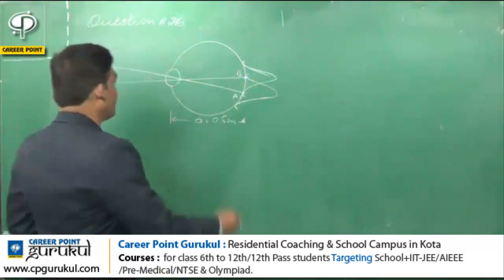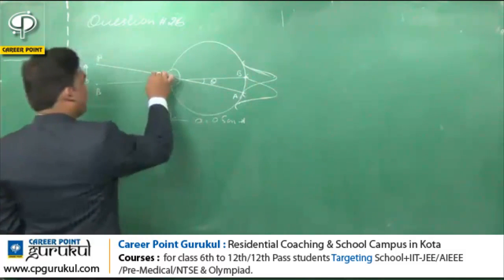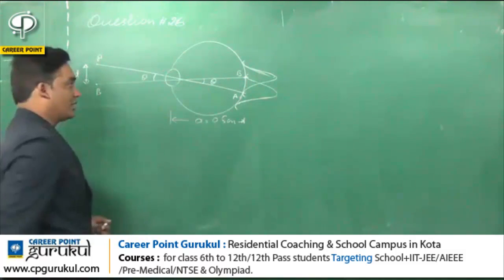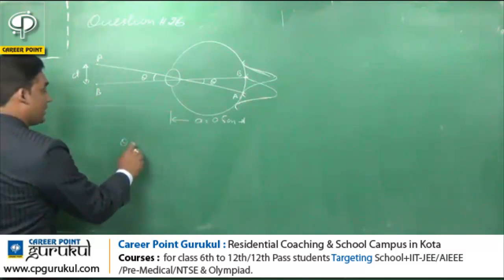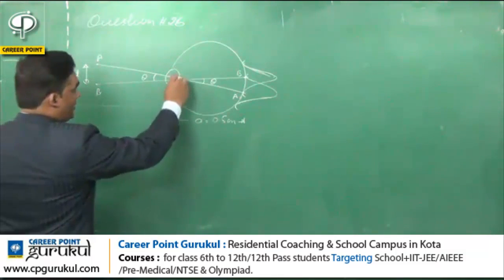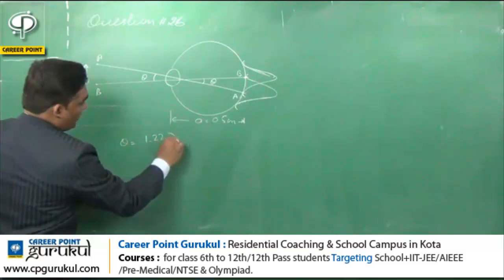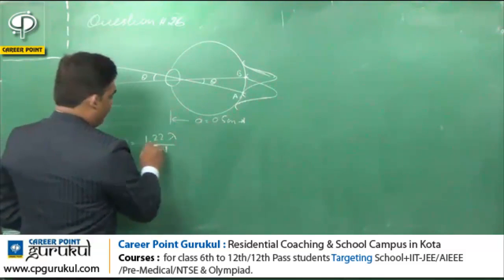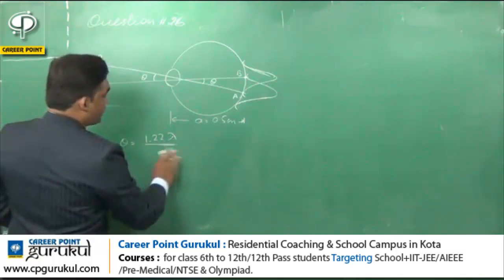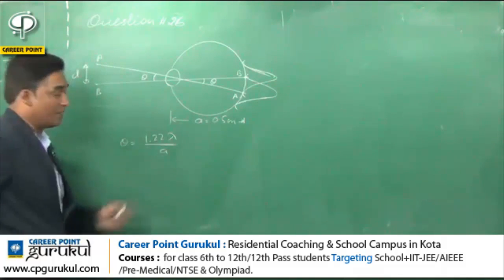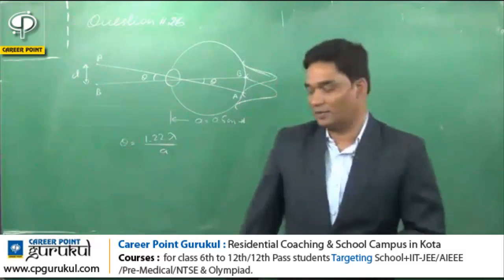We know that the distance between A and B is equal to lambda. If the resolve angle is theta, then for a spherical aperture, theta is given as 1.22 lambda by D, where D is replaced by A — the diameter of the pupil of the eye.